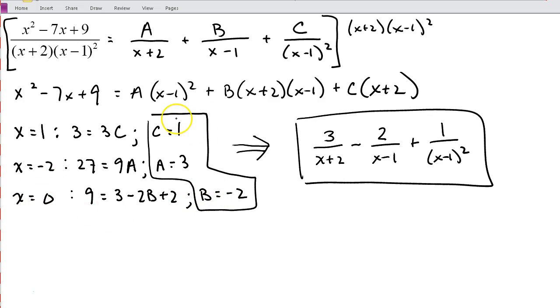So hopefully you've got a 1 for C, 3 for A, and negative 2 for B. And then you just go ahead and substitute those back into your original decomposition to get your final answer.